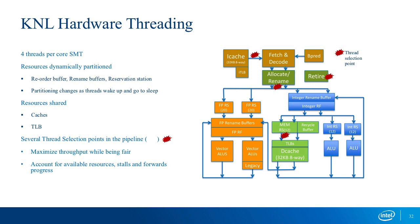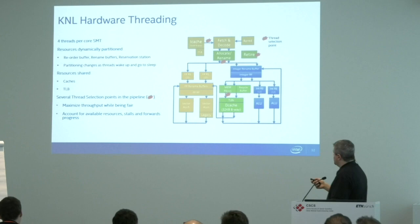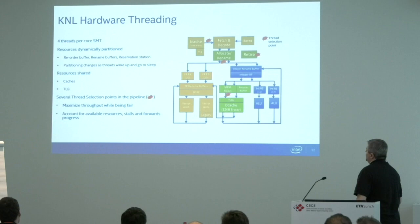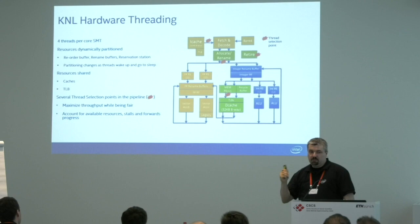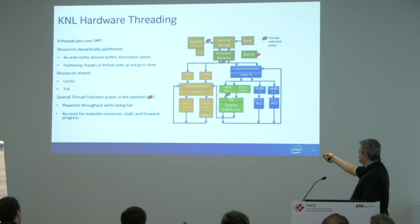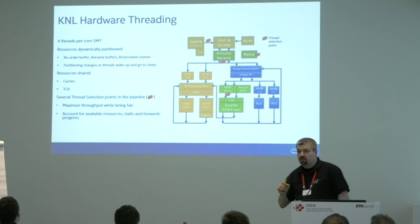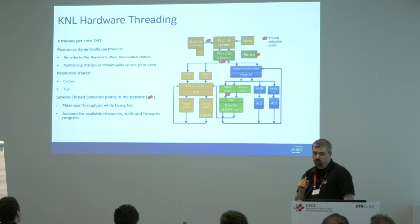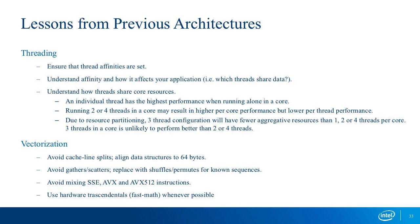Compared to Xeon, we only have a few scheduling points in the pipeline where we can switch to another hardware thread: during instruction fetch from cache, during allocation, when waiting for memory, and during retire. We cannot fill every execution bubble in the pipeline as Xeon would do — only a restricted set of scheduling points. Usually we have pretty good success with just one hardware thread per core.